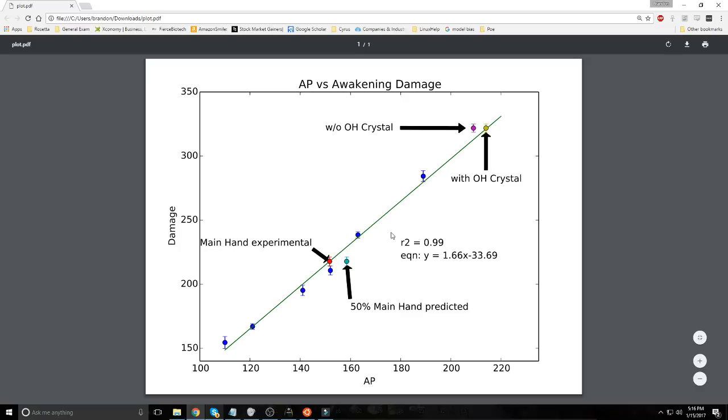So there are a couple of points on this graph that I want to draw your attention to. So the first is the main hand weapon. So it's commonly been thought that the main hand contributes about 50% of its AP to the awakening weapon damage. And we see something similar here.